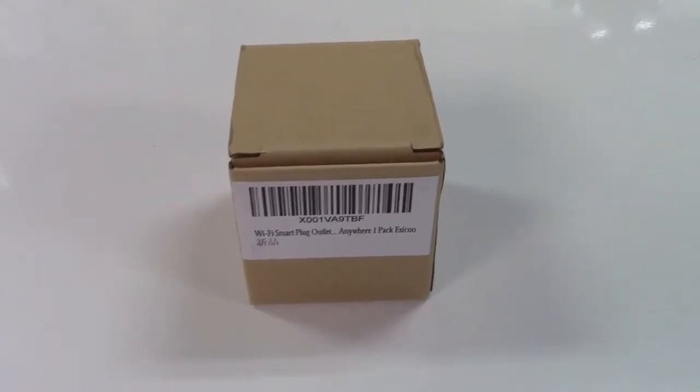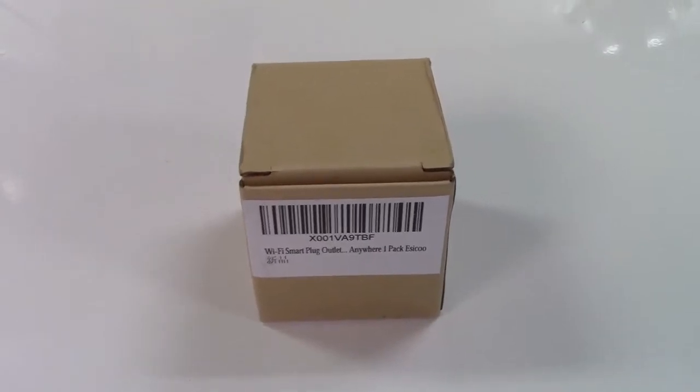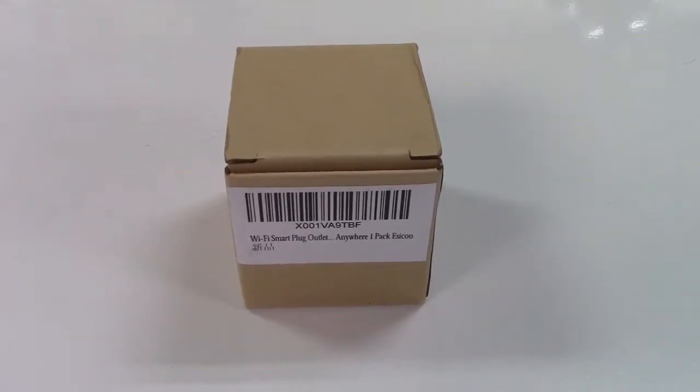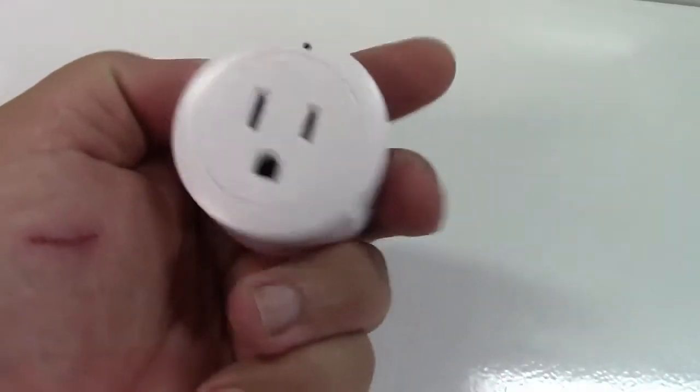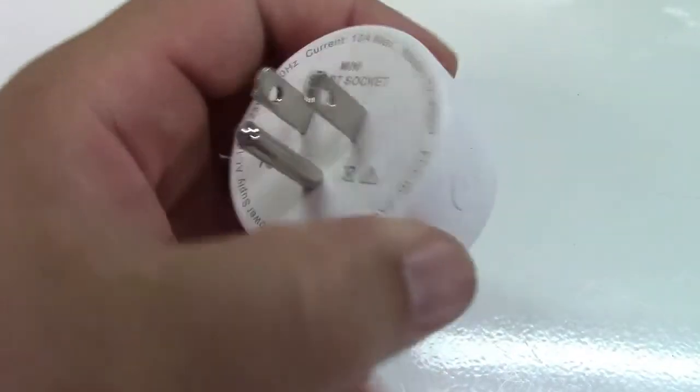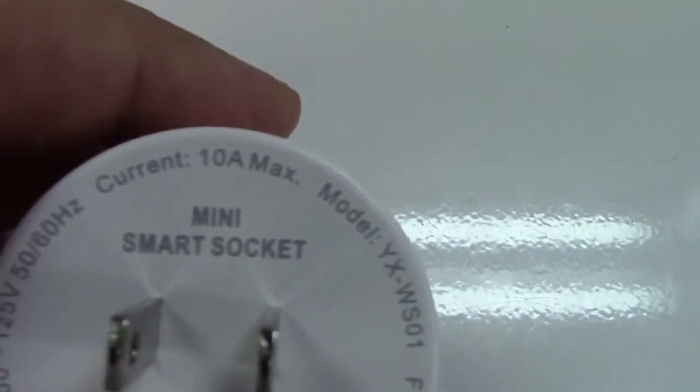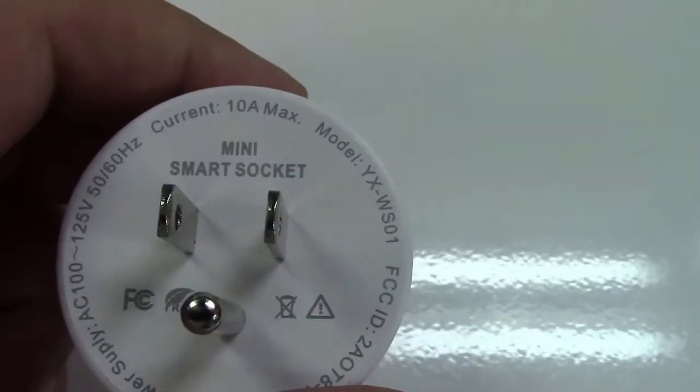This is the Essekoo smart plug. It works with Alexa and Google Home and also has cell phone control. Here's the unit itself. There's a status indicator there, a button on the side where you can manually turn it on and off, and your standard US plug. This particular one is a 10 amp model.